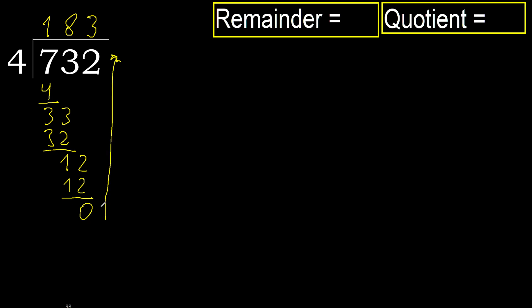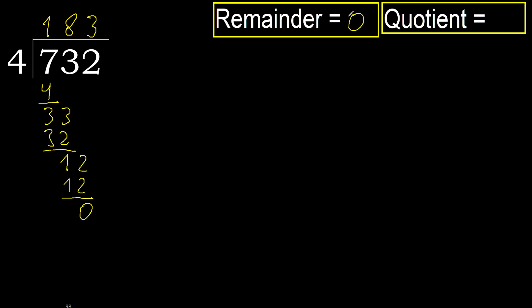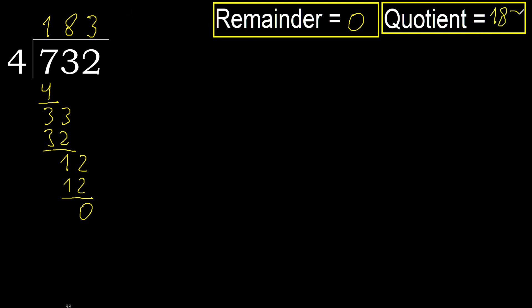Next: there is no number, therefore finish it. The remainder is 0, therefore 732 divided by 4 is here — the answer is here.